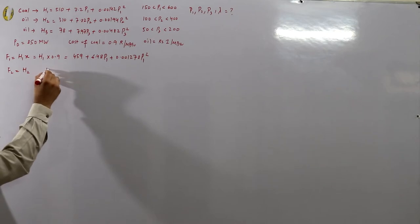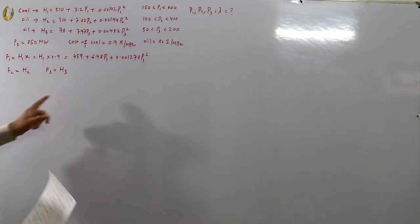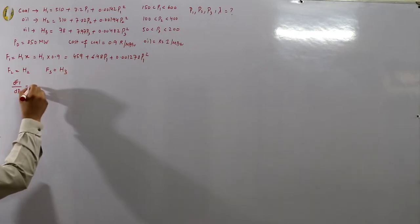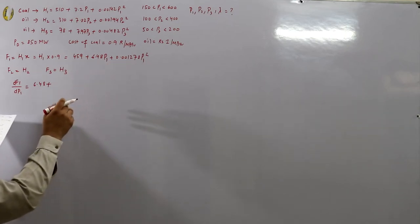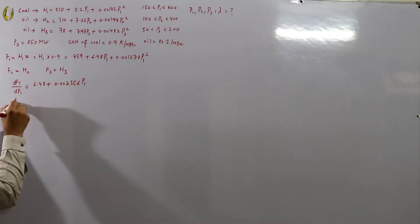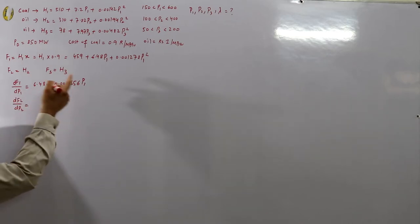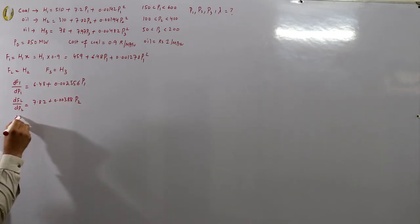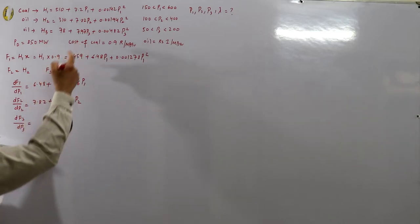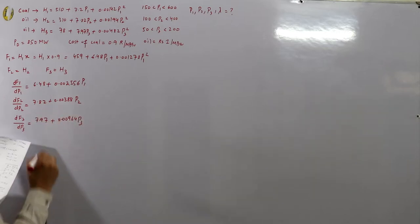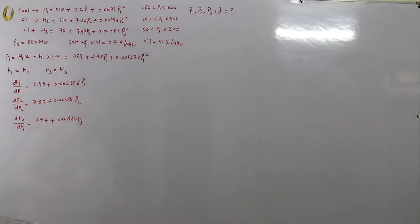Next, take the derivatives. df1/dp1 = 6.48 + 0.002556·p1. df2/dp2 = 7.82 + 0.00388·p2. df3/dp3 = 7.97 + 0.00964·p3. This is a lossless system.